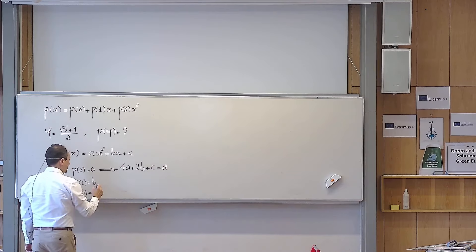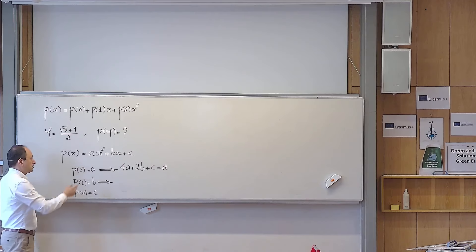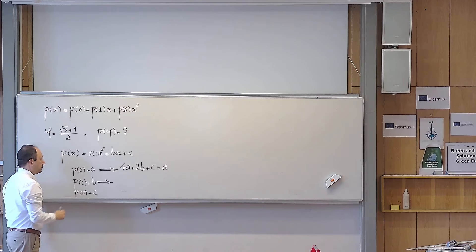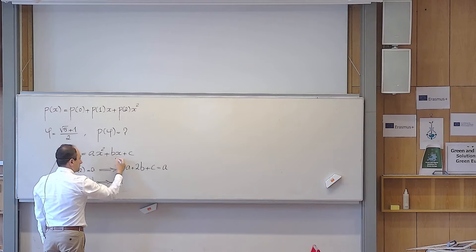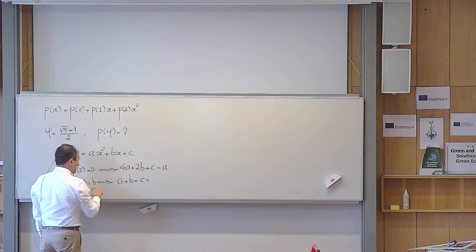And what about this one? Very similar. This means P(1) is equal to b. It means that if I replace every appearance of x with 1, the answer is supposed to be b. If I replace x with 1, 1 squared is 1. So it becomes a plus b plus c is supposed to be equal to b.